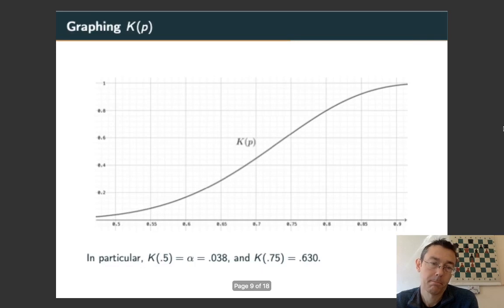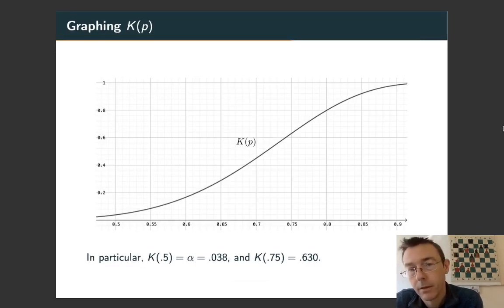Let's graph it. It's not surprising that it's increasing. As the true probability of success on particular guesses increases, the probability of rejecting the null hypothesis increases. Also notice that when p is 0.5, in other words when the null hypothesis is true, the power function gives us 0.038, exactly the significance level of the test.